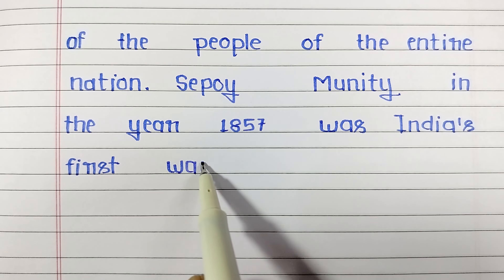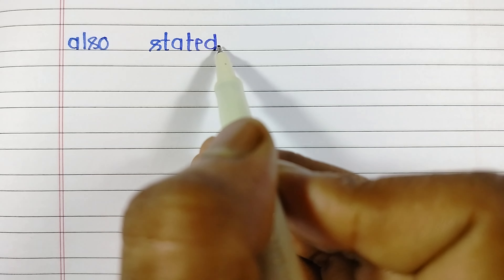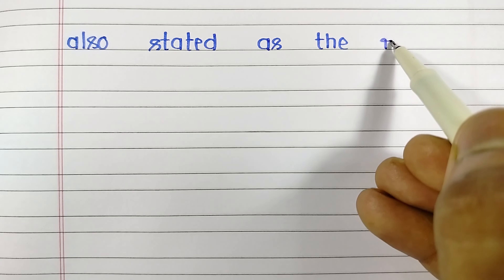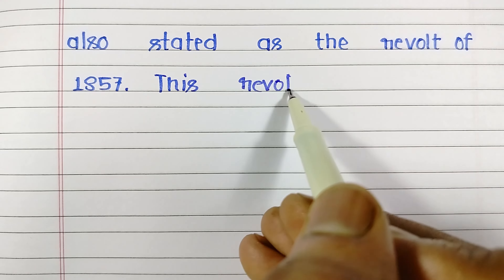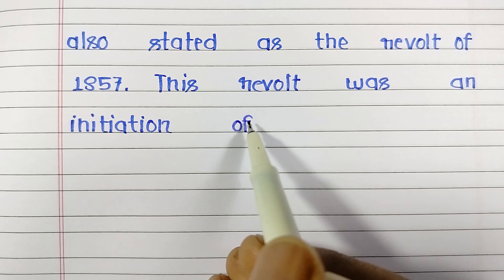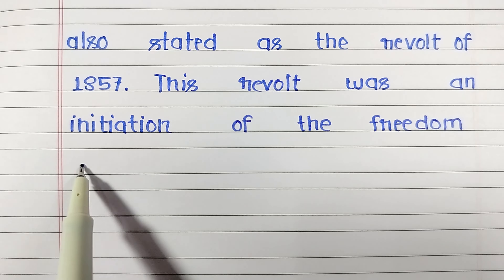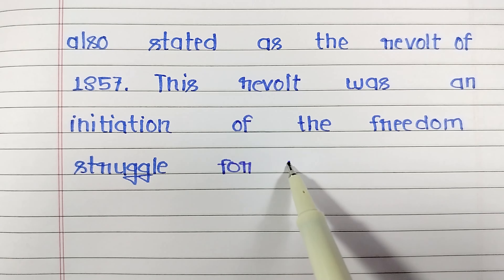The War of Independence, also stated as the Revolt of 1857, was an initiation of the freedom struggle for independence and never stopped till India became an independent nation.